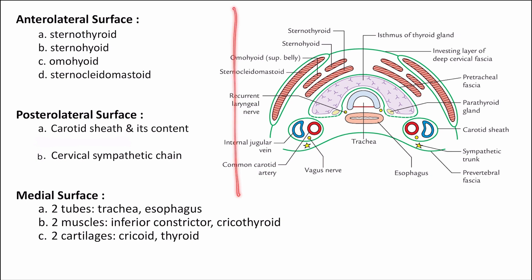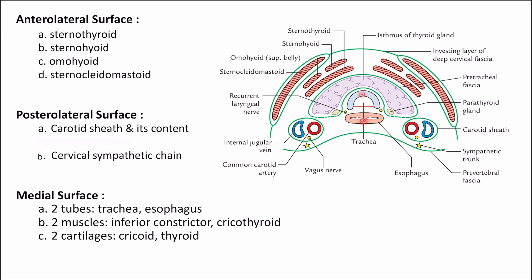In the transverse section schematic diagram, you can see the anterior-lateral surface, the posterior-lateral surface, and the medial surface. The anterior-lateral surface is related to the sternothyroid, sternohyoid, omohyoid, and sternocleidomastoid muscles — these flat muscles lie in front. On the posterior-lateral surface, you have the carotid sheath enclosing the common carotid artery, internal jugular vein, and vagus nerve. On the medial surface, there are two tubes (trachea and esophagus), two muscles (inferior constrictor of pharynx and cricothyroid), and two cartilages (thyroid cartilage and cricoid cartilage).